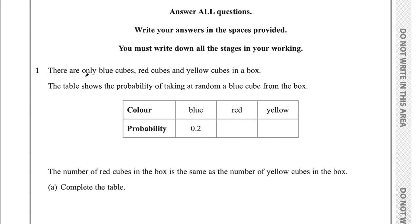The key word in the question is 'only'. There are only blue, red and yellow cubes, so when we take a cube out we're guaranteed to get blue, red or yellow. That means the probabilities need to add up to 1 — we're 100% likely to get one of these choices. So if blue is 0.2 we have a remaining probability of 0.8. Red and yellow are the same, so we divide 0.8 by 2 and get 0.4 for red and 0.4 for yellow.